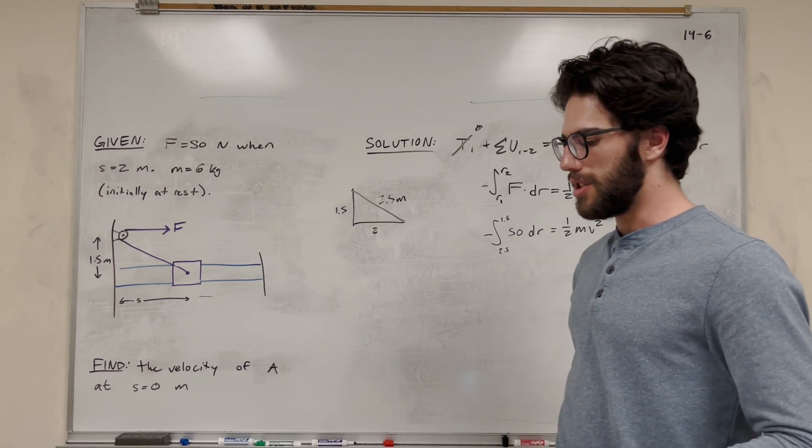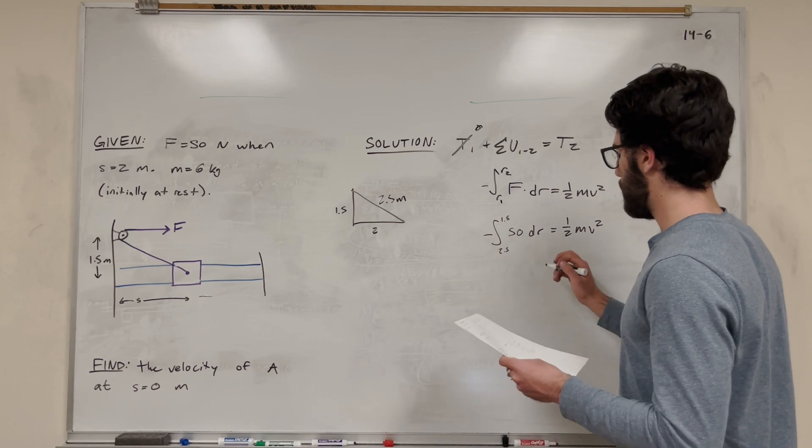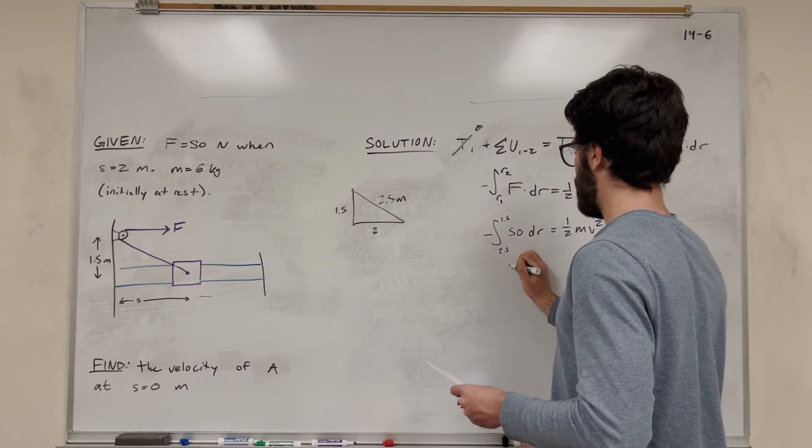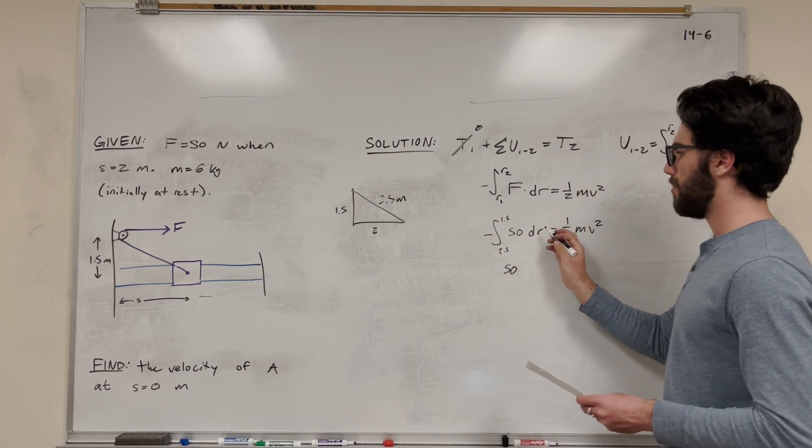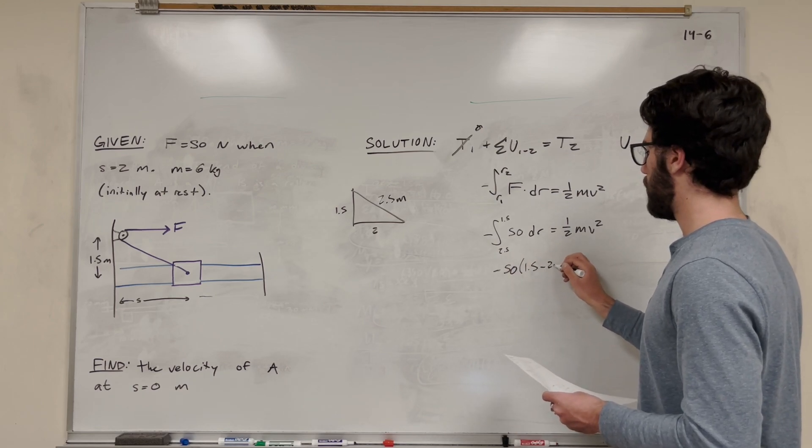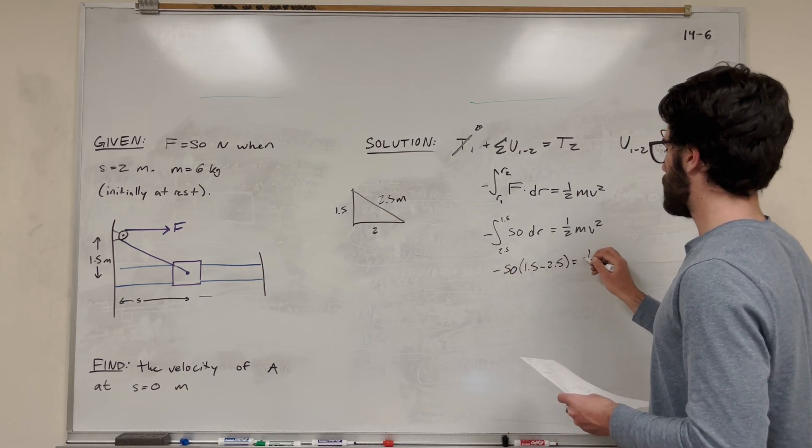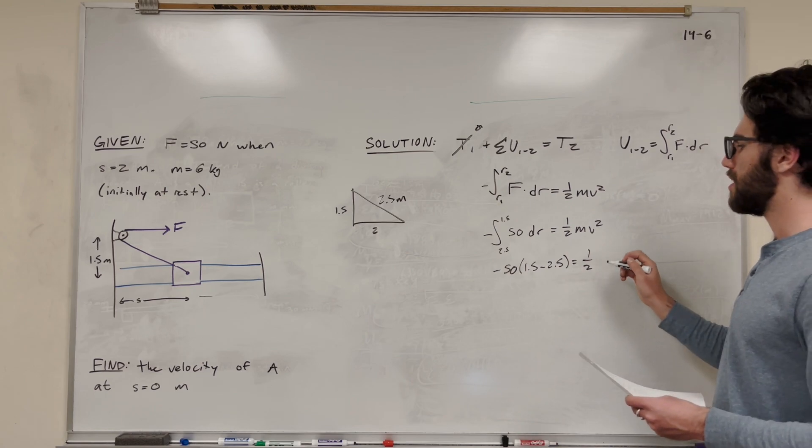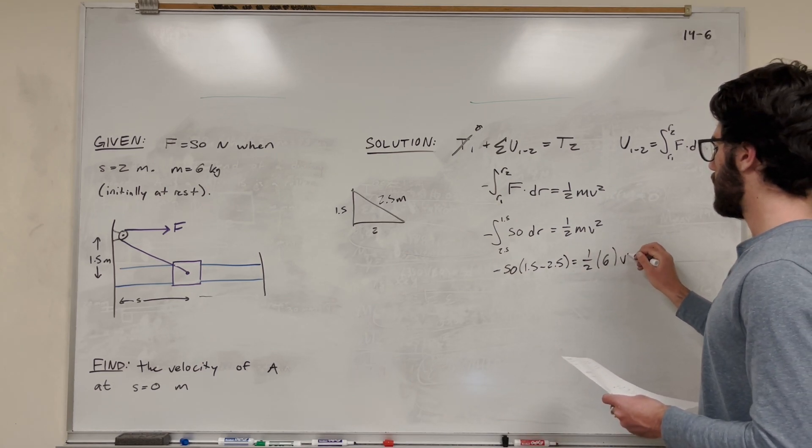So this integral becomes really easy to solve. It's just going to be equal to 50 times r, and it's just going to become 1.5 minus 2.5. Then what you can do is plug in our mass of 6 kilograms, and get velocity squared.